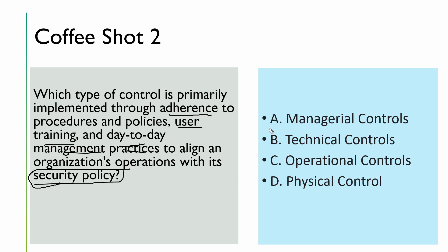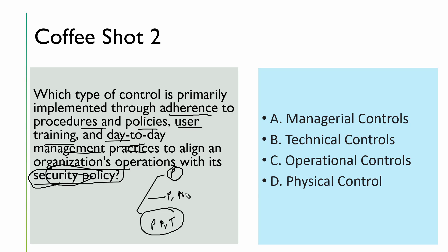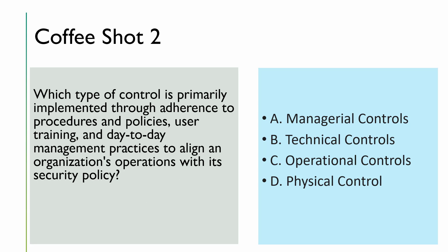Managerial control is eliminated because the question is not about implementing policy itself, but about implementing procedures and user training so people can comply with that policy. We have people, process, and technology being made to comply. Technical control is removed because the question isn't about anything technical. Physical doesn't make sense either. So the answer is C — operational control.